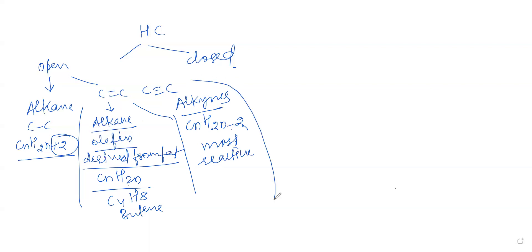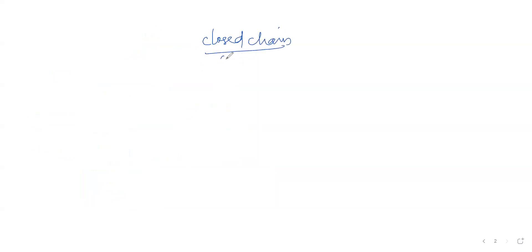Now, this much is already done. I'll focus on closed-chain or cyclic hydrocarbons on the next screen. The general formula for cyclic hydrocarbons is CnH2n.